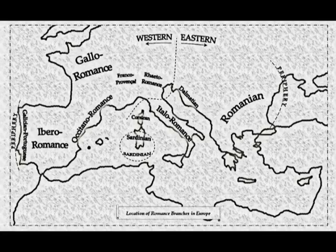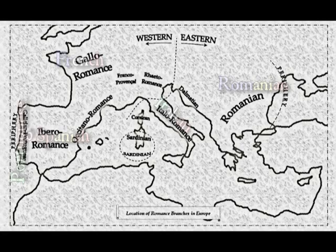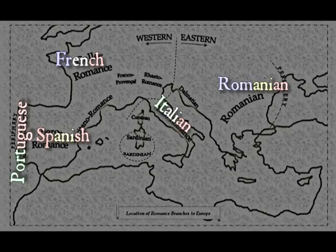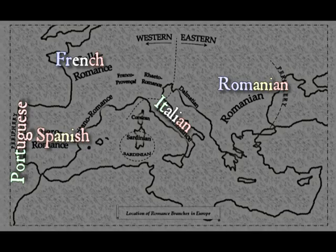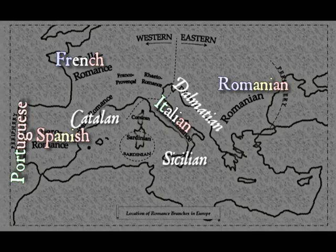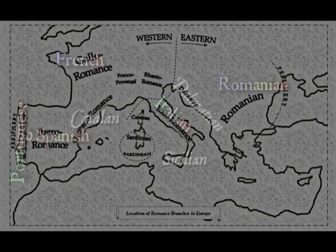Nowadays there are five major Romance languages: French, Spanish, Portuguese, Italian, and Romanian. Those are probably names you recognize. But there are other regional languages like Sicilian and Catalan, and extinct languages like Dalmatian, that give us a more complete picture of this language family.